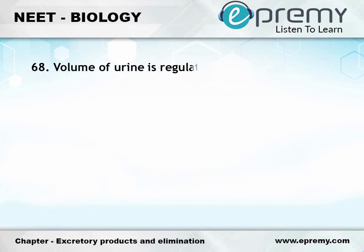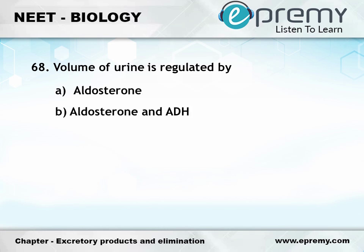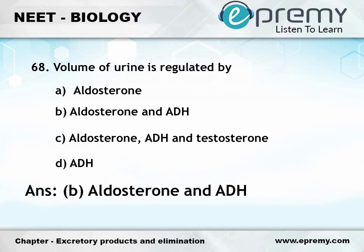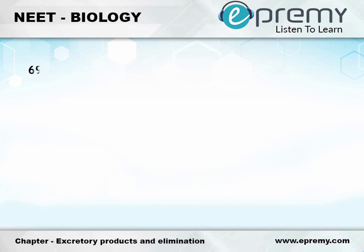Question number 68: Volume of urine is regulated by — Option A: Aldosterone, Option B: Aldosterone and ADH, Option C: Aldosterone and ADH, Option D: ADH. The answer is Option B: Aldosterone and ADH.